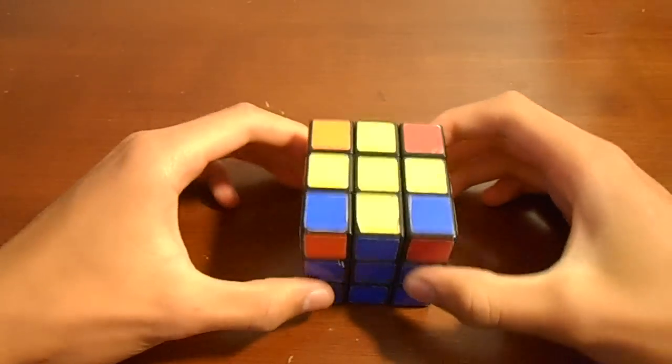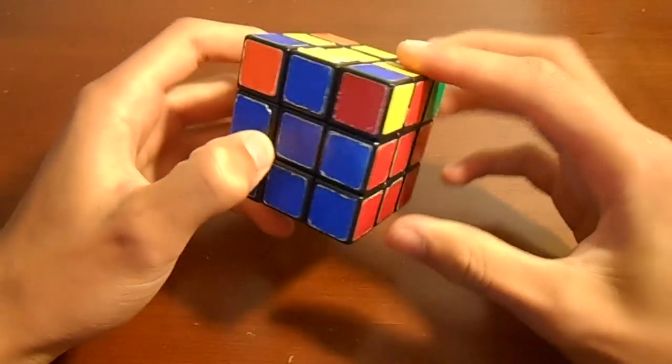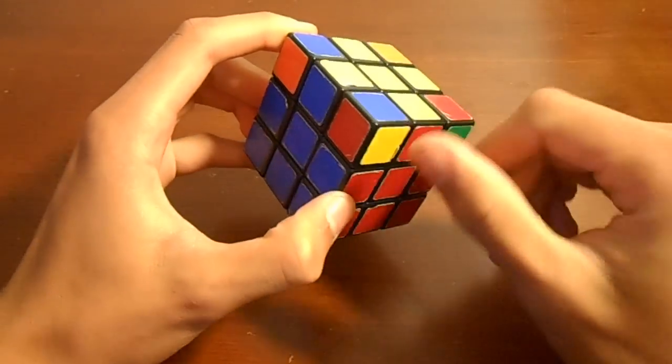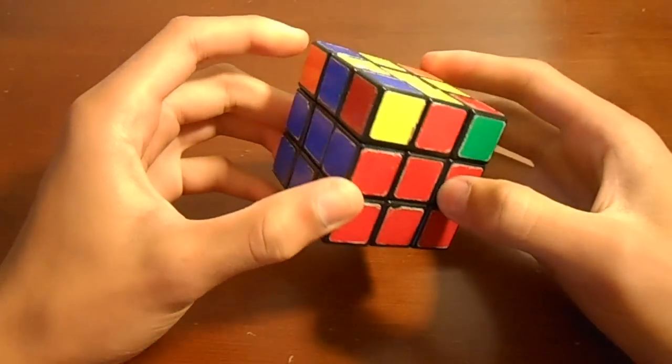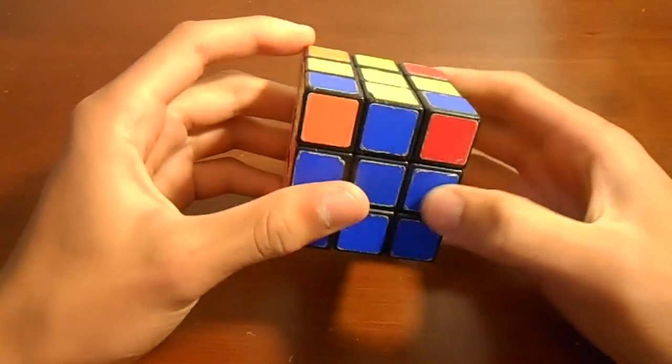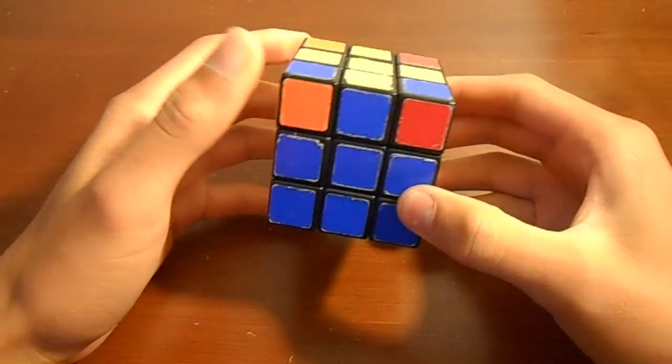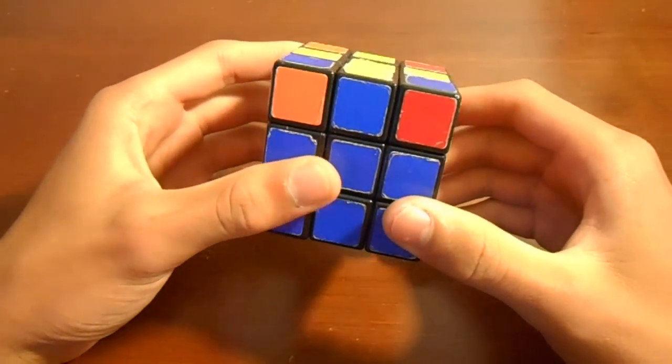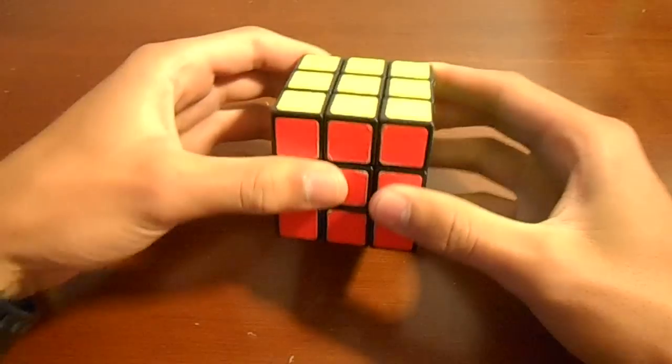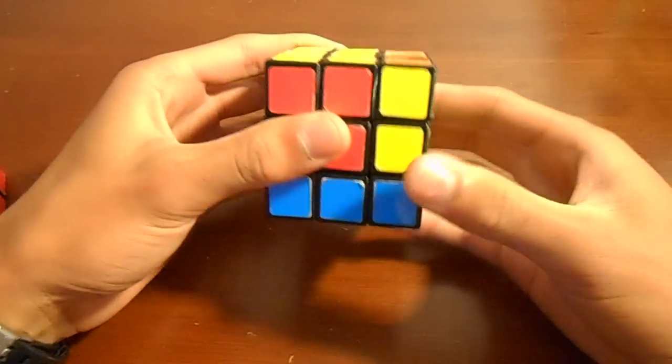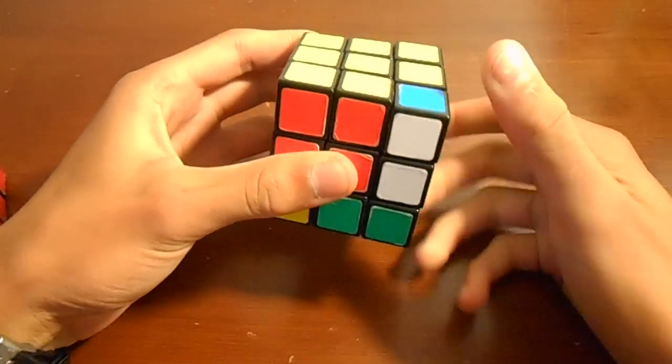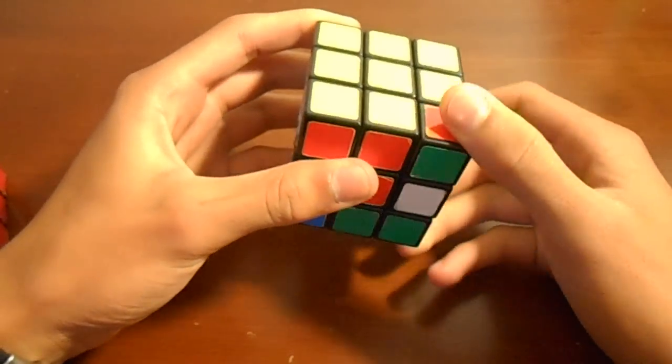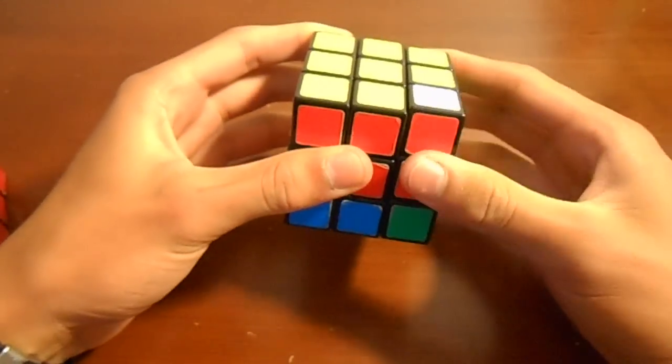So the final step of this process is we have to just rotate these corner pieces so then they will be all solved. So what we're going to do is we're going to just be doing four moves over and over again pretty much. And those moves are, I'll use this cube, so that is R' D, R, D'. So once again, R' D, R, D'.